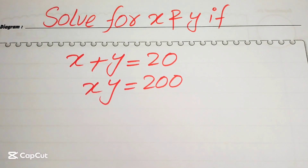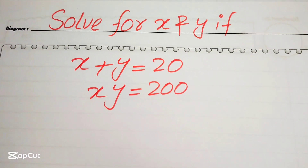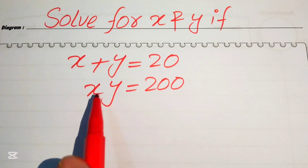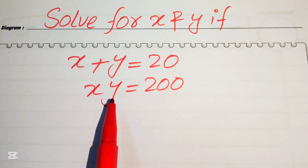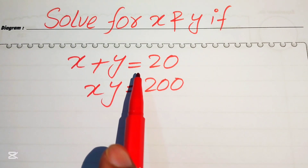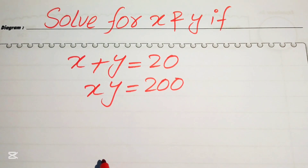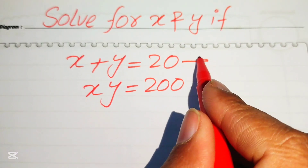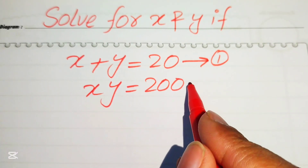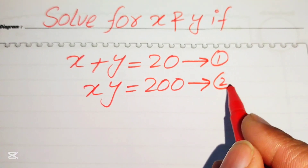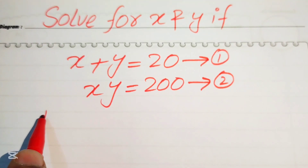Hello everyone, welcome to solve this nice math algebra problem. Here we have x plus y equals to 20, and x times y equals to 200. We will solve this problem for the values of x and y. We call the first equation number one and the second equation number two.